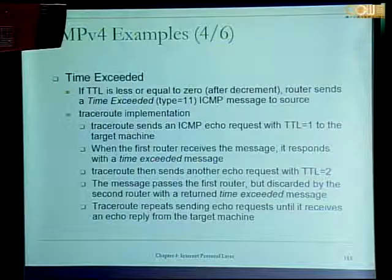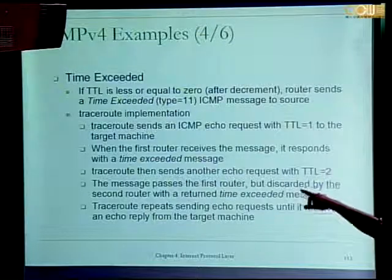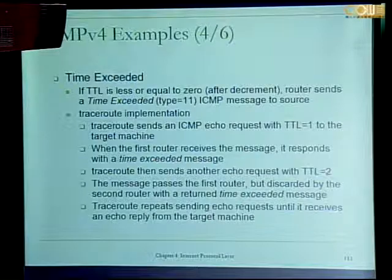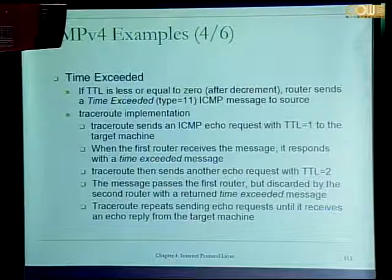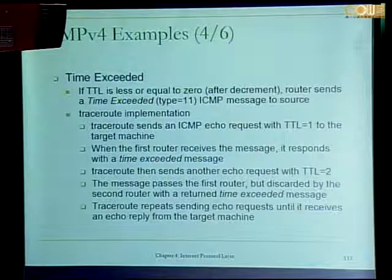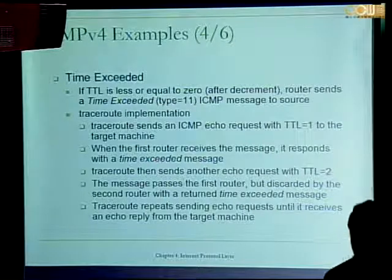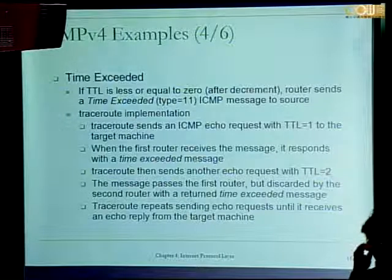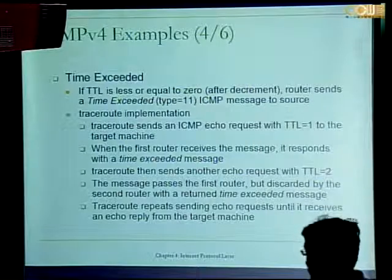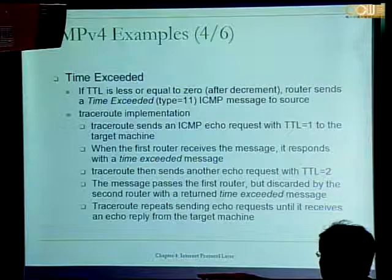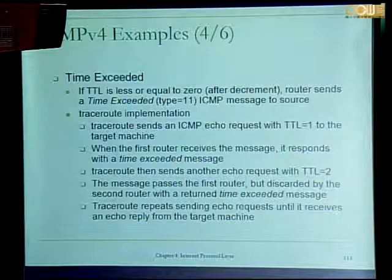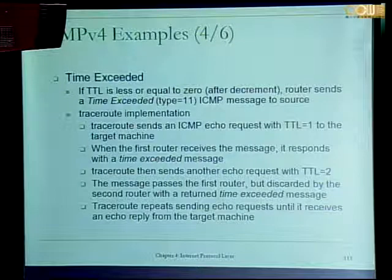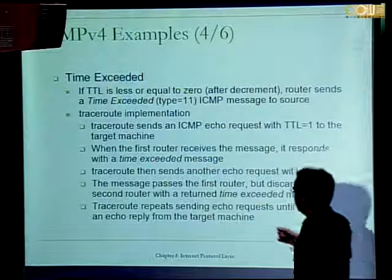The traceroute tool sends an ICMP echo request with TTL set to one, toward the target machine the user specified. When the first router receives this echo request, it decrements the TTL from one to zero. After decrementing, it checks that TTL has reached zero, drops the echo request packet, and sends an ICMP time exceeded message to the source. So the source then knows who the first router is. Then traceroute does this again.